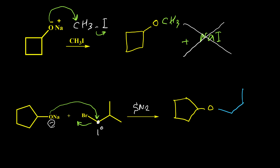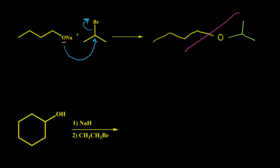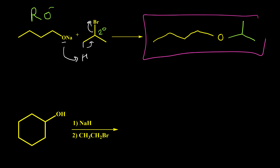In the next example, we have O-negative and one might think the O-negative attacks and kicks bromine out, but this is not the case. The reason is that this alkyl halide is secondary, and a secondary alkyl halide with an alkoxide anion cannot undergo an SN2 reaction. Instead, they have an E2 reaction, giving an alkene. The alkoxide anion acts as a base, takes a hydrogen, electrons move between carbons, and bromine is expelled.